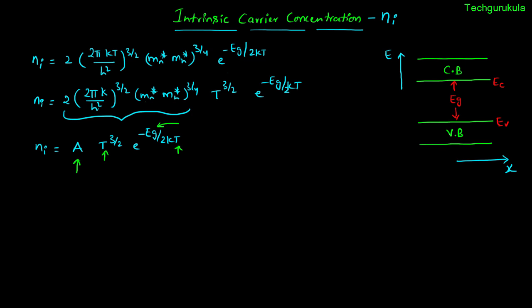The constant A depends on the effective masses of electron and hole, along with the constants K (Boltzmann constant) and h (Planck's constant). The effective masses are characteristic of the material itself, so A depends on the material. EG also depends on the material — for silicon EG is 1.1 eV at room temperature, and for germanium it is 0.66 eV. So Ni is a strong function of both the material you are using and the temperature.